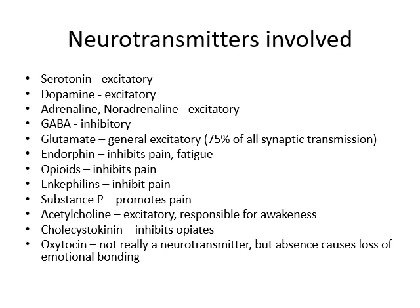Depression is thought to usually involve deficiencies of these big three neurotransmitters, but we don't yet have tests to determine whether a person is suffering from serotonin, dopamine, or adrenaline deficiency. So when you prescribe an antidepressant you're basically shooting in the dark, because most antidepressants work on only one or two of the three. It may be necessary to switch to different classes of drugs until you find the right neurotransmitter to address.